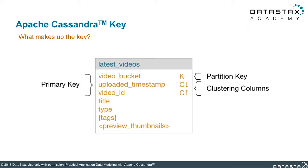Clustering columns also have some useful attributes as well, namely being able to determine the ordering of CQL rows stored within a partition, and making searching those clustering columns slightly easier.